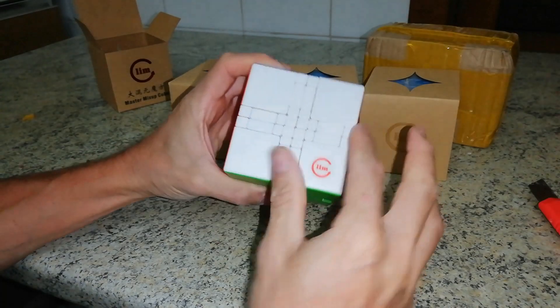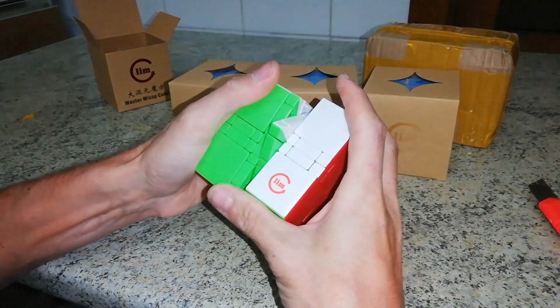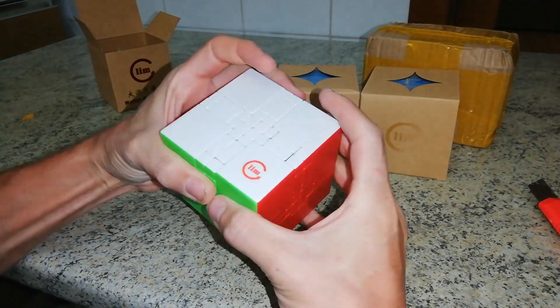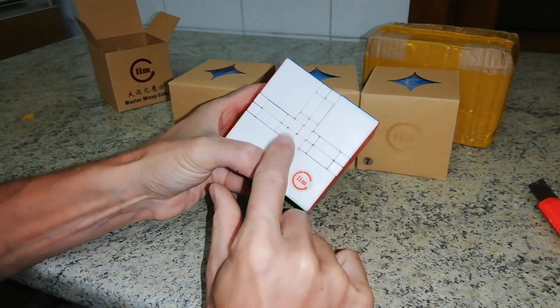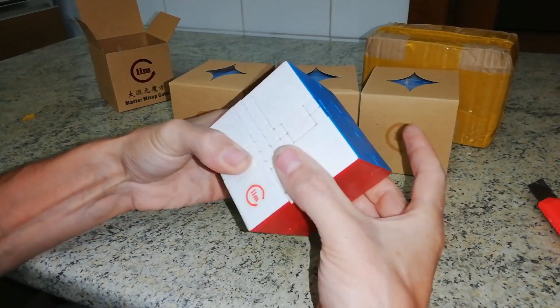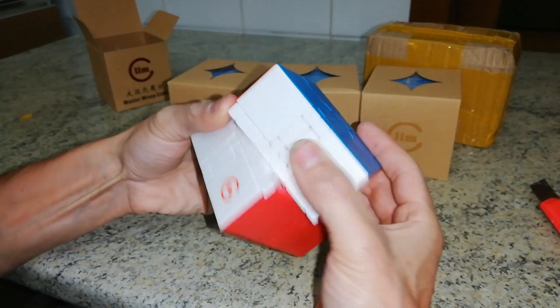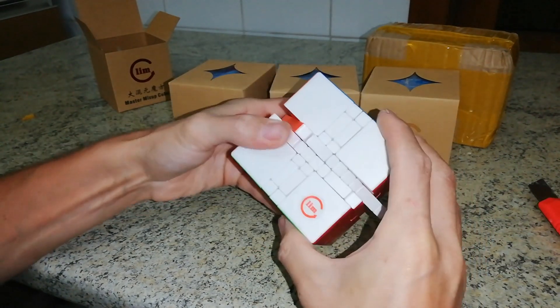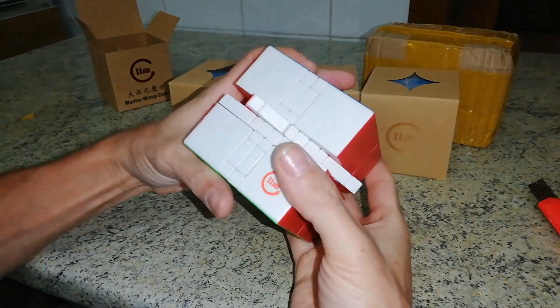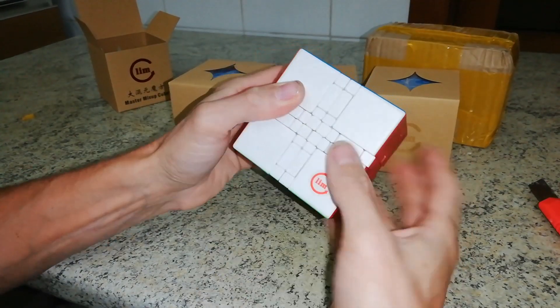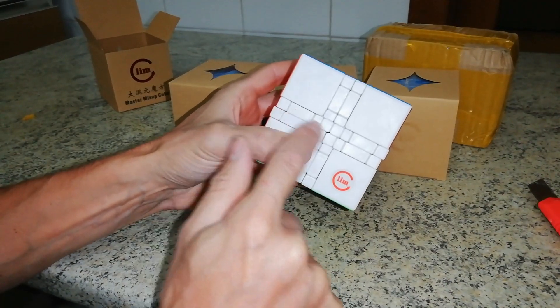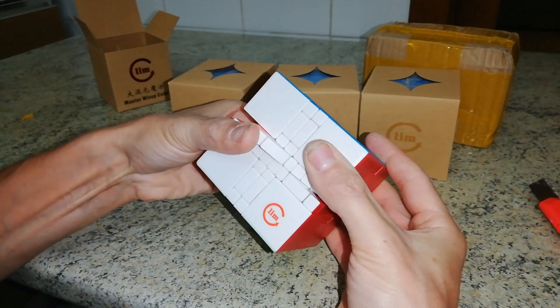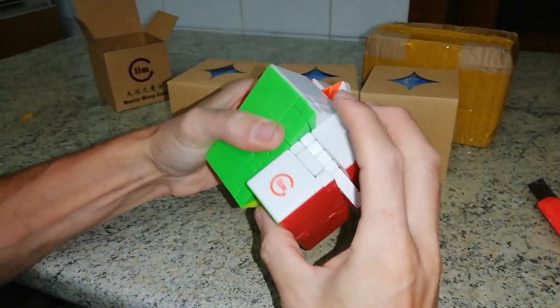This puzzle looks like a 3x3x3 or a 4x4x4 because we have four layers that can rotate. But this puzzle here can exchange some pieces in the center. In particular if I place this part here rather than the two pieces of the center, I can place this largest part to this position in this way. And now I can continue the rotation.